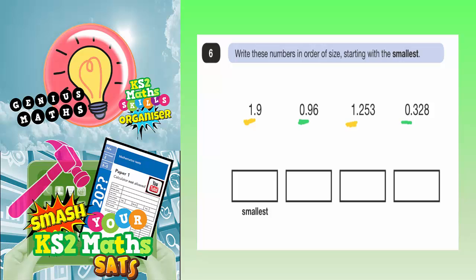So let's have a look at the ones in green first because they're going to be smaller. 0.96 has got 2 digits after the decimal place. And 0.328, that's got 3 digits after the decimal place.